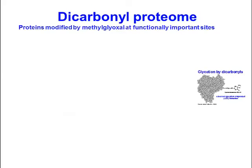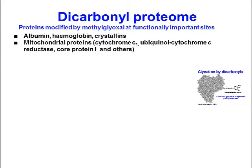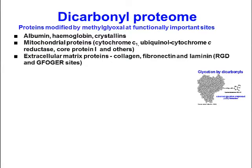Proteins modified by methylglyoxal at functionally important sites are members of the dicarbonyl proteome. Proteins identified so far include albumin, hemoglobin, crystallin, mitochondrial proteome proteins, extracellular matrix proteins such as collagen, fibronectin, and laminin.